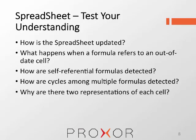Here are some things you should know about the spreadsheet's implementation: How is the spreadsheet updated? What happens when a formula refers to an out-of-date cell during the update process? How are self-referential formulas detected? How are cycles among multiple formulas detected? Why are there two representations of each cell? A cell can contain an editable formula, yet it has to display the value of that formula. If you think about these questions and read the code and come up with answers, you'll have a pretty good idea of the general structure of the spreadsheet and be ready to make changes when you need to.